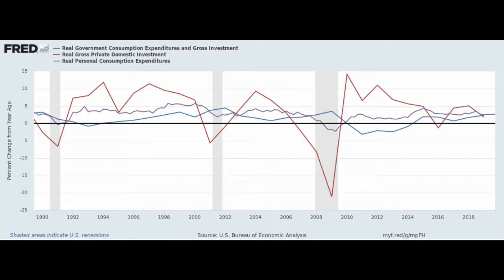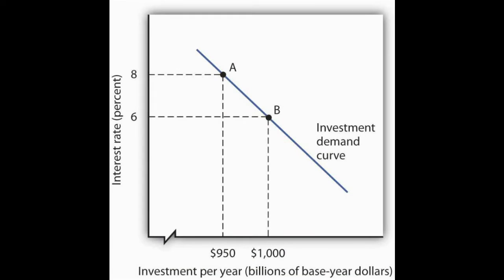But how do we determine how much investment will occur in the economy? The market for investments can be graphically represented with an investment demand curve. Like most demand curves, it's downward sloping, representing a negative relationship between interest rates and investment activity. The higher the interest rate, the less investment will be demanded.